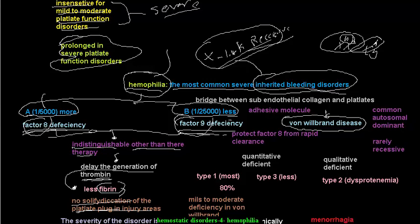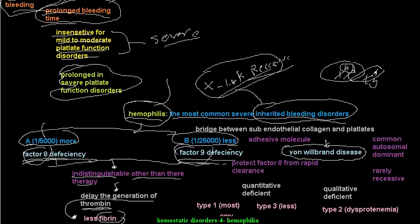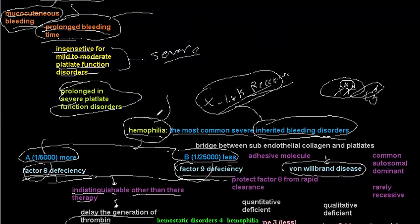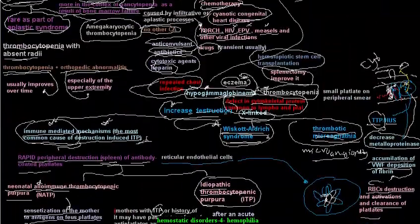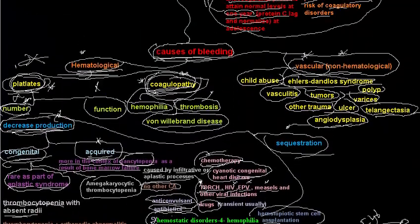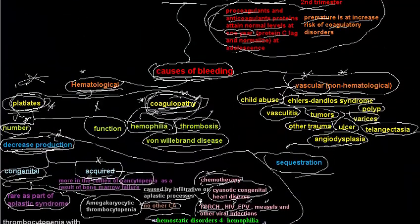This video completes our talk about hematological or hemostasis disorders. In the previous video I talked about hemophilia, which was the first part of coagulopathy. We divide hematological disorders into platelets and coagulopathy, and hemophilia was the first part of coagulopathy.